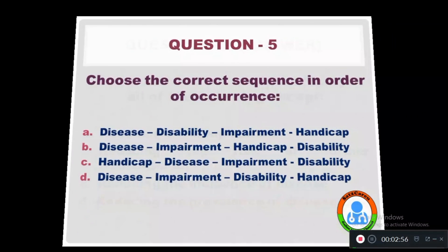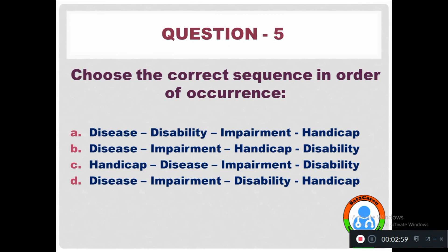Question 5: Choose the correct sequence in order of occurrence. Option A: Disease, Disability, Impairment, Handicap. Option B: Disease, Impairment, Handicap, Disability, Handicap. Option C: Handicap, Disease, Impairment, Disability, Handicap. The correct sequence in order is: Disease, Impairment, Disability, and Handicap.